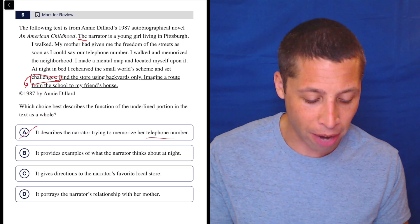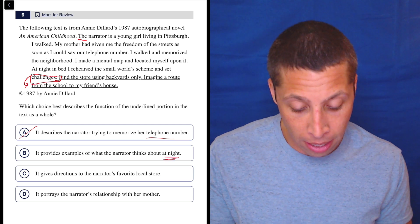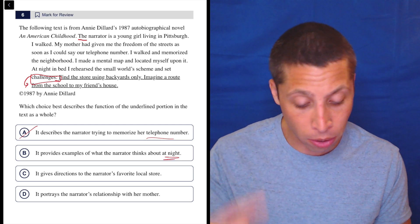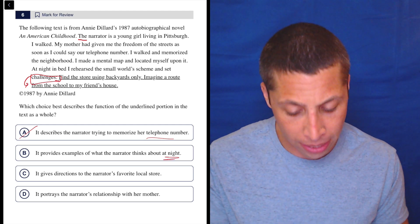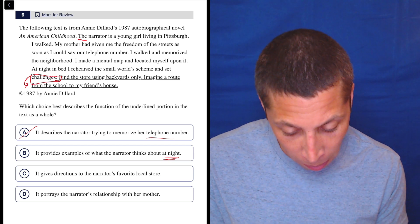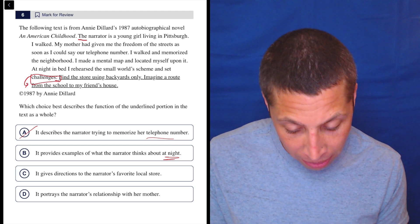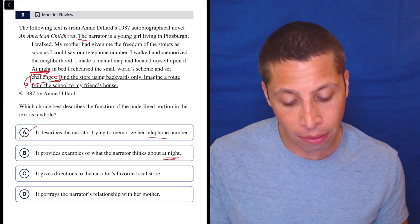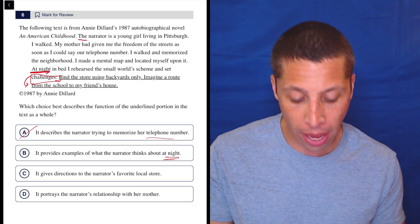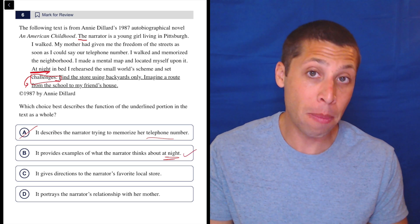Choice B: It provides examples of what the narrator thinks about at night. Maybe, because now I'm like, is it happening at night? Let's go back a little bit. My mother gave me the freedom, I made a mental map, at night in bed I rehearsed the small world's scheme. Okay. So that part checks out. Maybe that is the answer. I genuinely don't know,